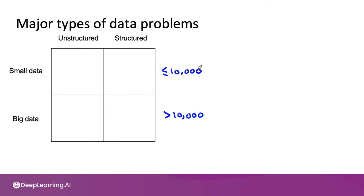This boundary is a little fuzzy, and the transition from small to big datasets is a gradual one. But the best practices for having, say, 100 or 1,000 examples are pretty different from having a very large dataset. The reason I chose 10,000 is that's roughly the size beyond which it becomes quite painful to examine every single example yourself. With 1,000 examples you could probably examine every one, but with 100,000 or a million examples it becomes very time consuming for a small machine learning team to manually look at every example.